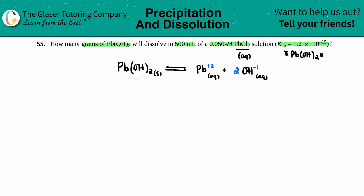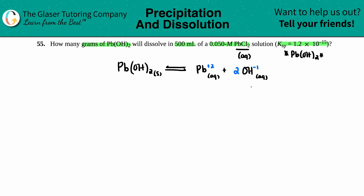To find how many grams dissolve in 500 milliliters, we need the molarity (molar solubility). With a Ksp we can find that using a variable. However, always check for a common ion — we're already in a 0.050 M PbCl₂ solution, which is aqueous and dissolves 100% into its ions: Pb²⁺ and Cl⁻.